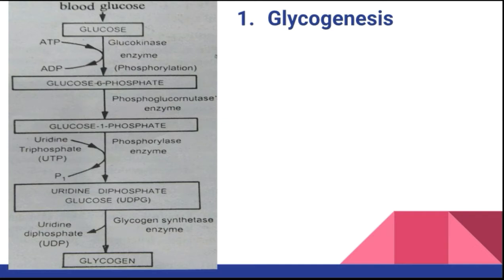Let's get started. Today's first topic is glycogenesis. 'Glyco' means glycogen and 'genesis' means formation. All cells of an animal body are capable of storing glycogen, but mammalian liver and muscles can store glycogen up to 15 to 20% of their weight.